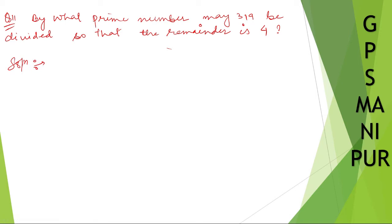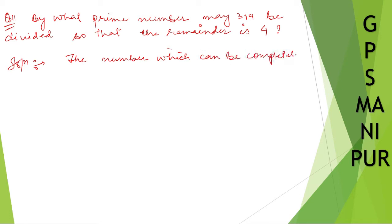The first thing we need to understand is that the number which can be completely divided is equal to 319 minus 4. So 319 minus 4 is 315. This is the number which can be completely divided by prime numbers — the remainder will be zero.